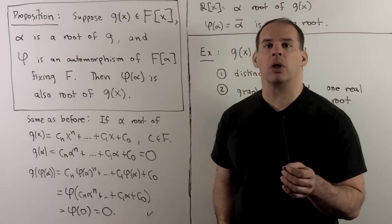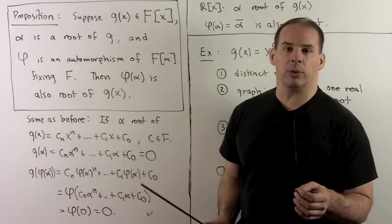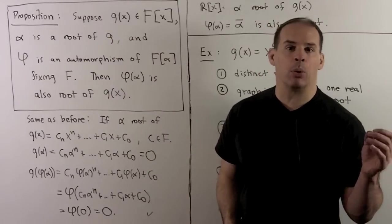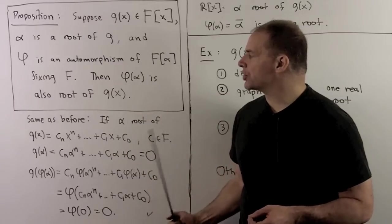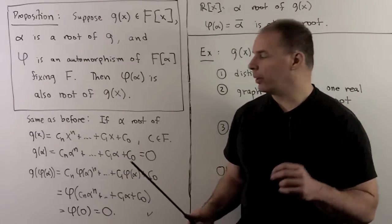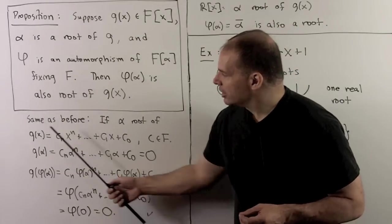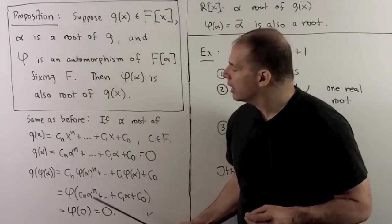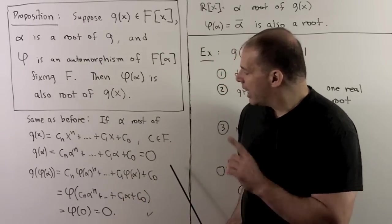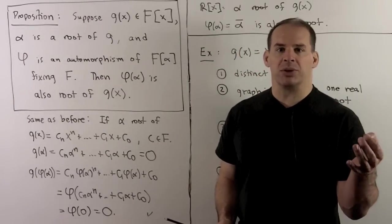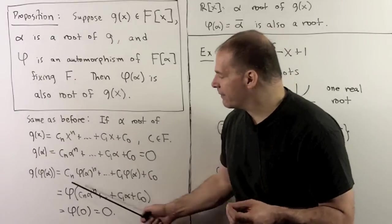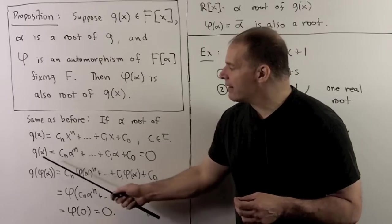Here is a proposition that will play a central role going forward. Let g be a polynomial with coefficients in a field F, let α be a root of g, and let φ be an automorphism of F(α) that fixes F pointwise. Then φ(α) is also a root of g. Proof: write g in terms of its coefficients in F; substituting α gives zero. For g(φ(α)), since φ is an automorphism we can push exponents inside, φ fixes elements of F so we move coefficients inside, and we get the conjugate of g(α) = 0. So φ(α) is also a root.